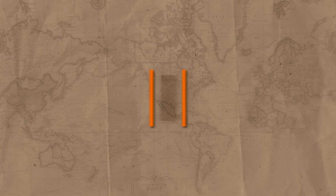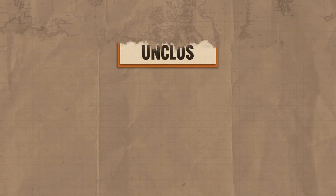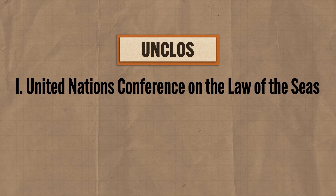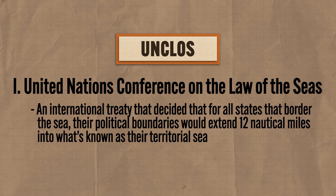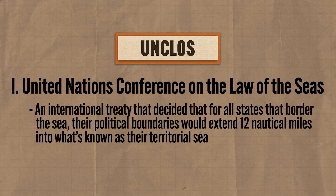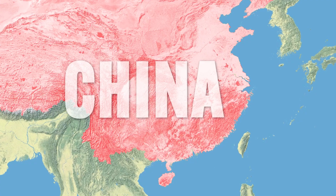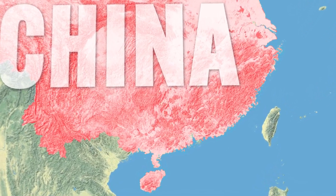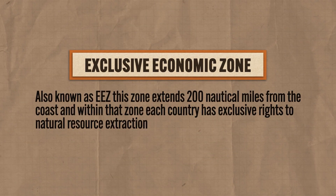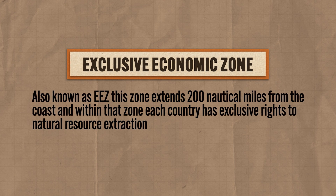And finally, we get to sea boundaries. For this I need to introduce you to UNCLOS — the United Nations Conference on the Law of the Seas. This is an international treaty that decided for all states that border the sea, their political boundaries would extend 12 nautical miles into what's known as their territorial sea. States aren't merely interested in exerting sovereignty over resources buried under their dirt — they also want to control what goes on in the water. The treaty divided the seas into four zones, but the most important is the exclusive economic zone, or EEZ, which extends 200 nautical miles from the coast. Within that zone each country has exclusive rights to natural resource extraction.